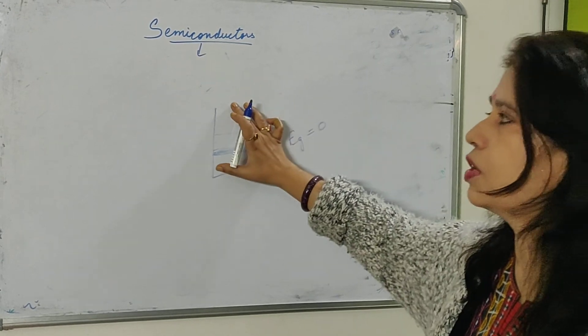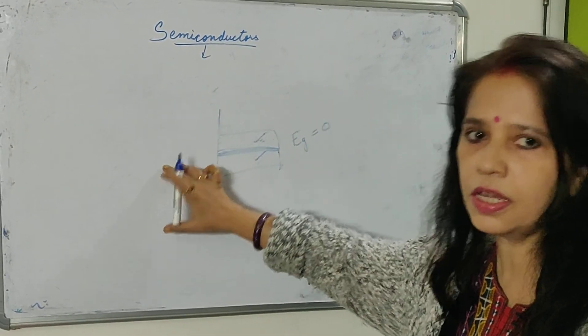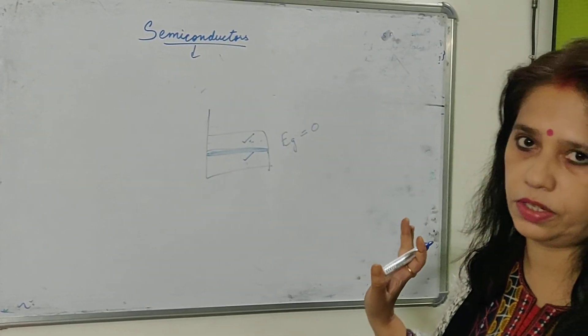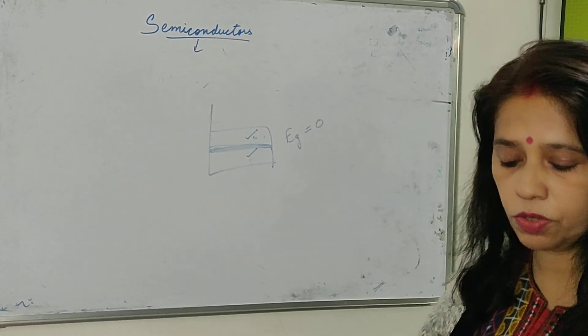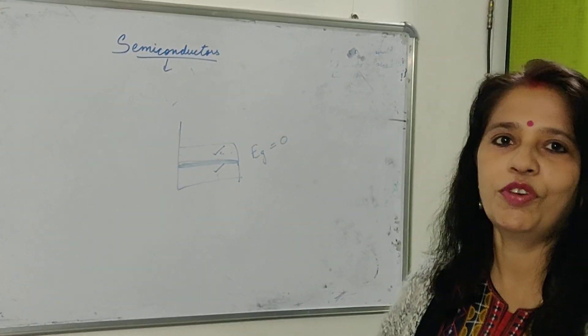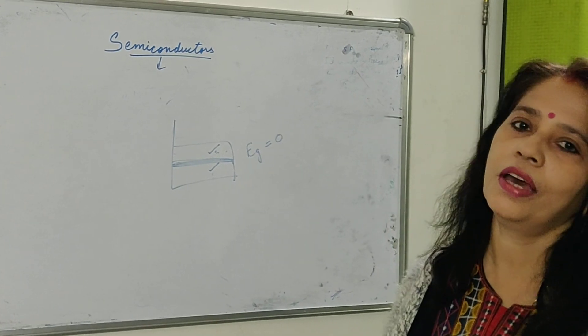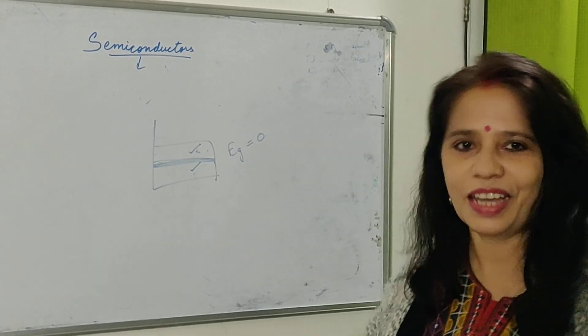So, on this basis, we can differentiate between conductors, semiconductors and insulators. I hope, this whole thing is clear to you all. In the next class, we will be doing about P and N type semiconductors. Thank you.